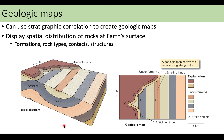With all of this understanding we can also look at geologic maps. The key thing to remember is that a geologic map only shows the distribution of rocks and rock types on Earth's surface — you're seeing formations, rock types, contacts, and structures, but only what is at the surface. Here is a block diagram of a geologic map; using correlations we can identify syncline and anticline hinges. We have to remember it's only showing us what is right at Earth's surface — we are not seeing the layers beneath.